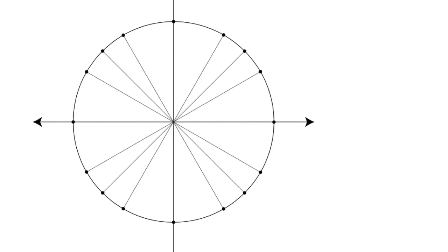This is the unit circle on the Cartesian plane — we'll need it to find exact values for trig ratios for angles between 0° and 360°. Starting with the axes: 0° is at the right, 90° at the top, 180° at the left, 270° at the bottom, and 360° back at 0°. The coordinates at these axes are (1,0), (0,1), (-1,0), and (0,-1).